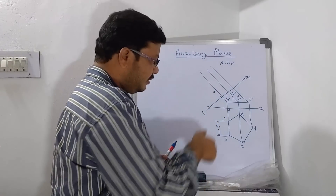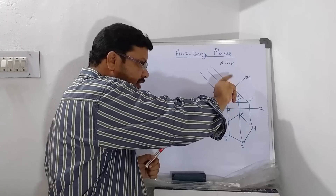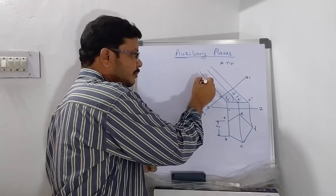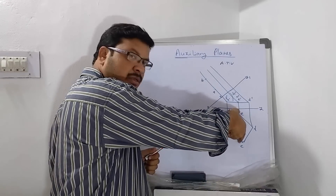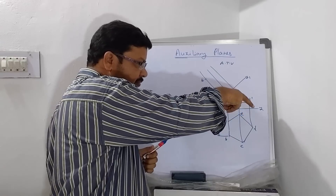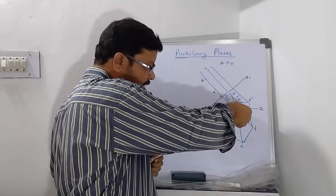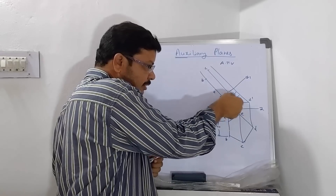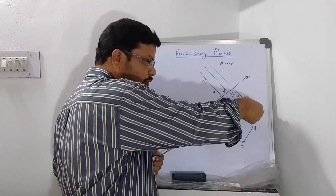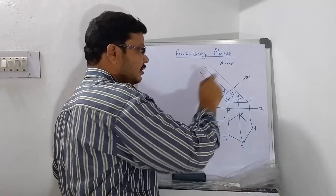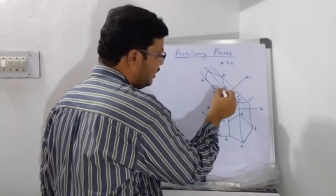To get point B, take the XY to B distance with compass, move to B dash, then move to the new reference line, and from here draw the arc — you will get B point somewhere here. To get C, take the XY to C distance with compass, move to C dash, then move to the new reference line and draw the arc — it will intersect somewhere here. For point E, take the small distance from XY, move to E dash, then move to the new reference line and draw the arc. For point D, take the distance of D from XY, move to D dash, then to the new reference line and draw the arc. Now join A, B, C, D, E and A — this is the auxiliary top view, which we get in the second stage.